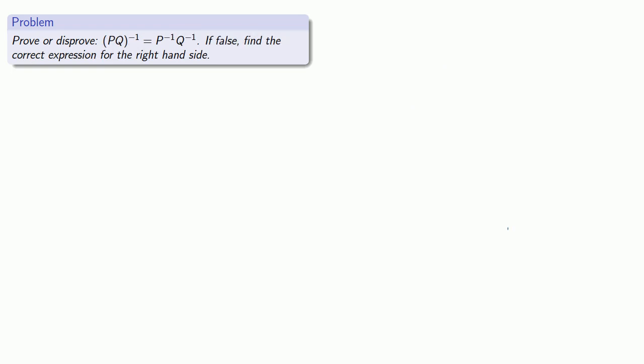That was a lot of fun. Let's try to prove or disprove that the inverse of PQ is P inverse times Q inverse. Remember that proving has the concept of testing, and testing has the possibility of failure — but if it does fail, it gives us an opportunity to fix what was wrong. So let's go beyond proving or disproving and find the correct expression if it turns out to be incorrect. The inverse of PQ is the matrix that, when multiplied by PQ, gives the identity. If PQ inverse equals P inverse Q inverse, then multiplying P inverse Q inverse on the right by PQ should give the identity matrix.